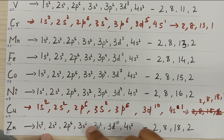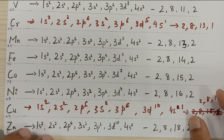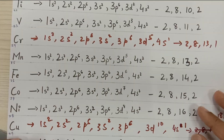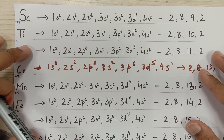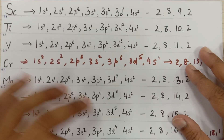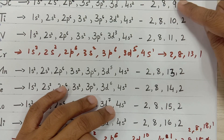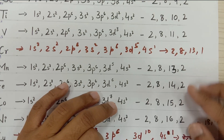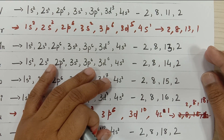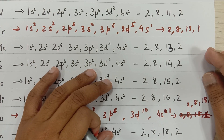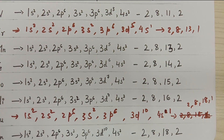For zinc, you can try it by yourself — it follows the normal pattern. Hopefully you have understood how to write the electronic configuration. Just go through them, and if you have any doubts please comment in the comment section. Thank you for watching the video.